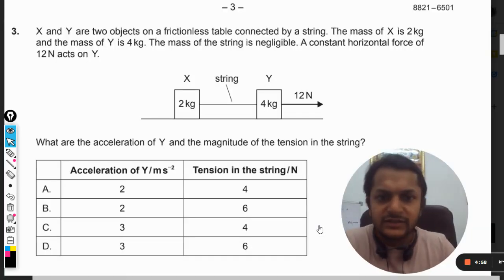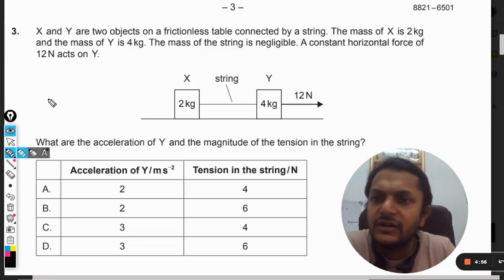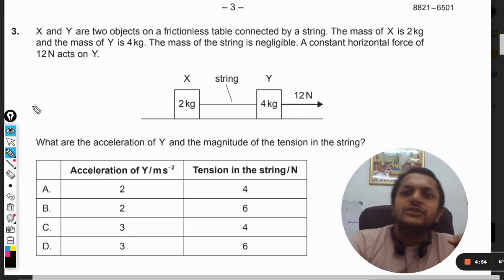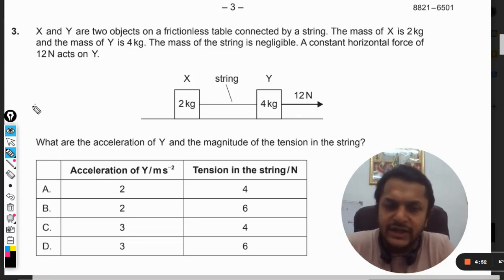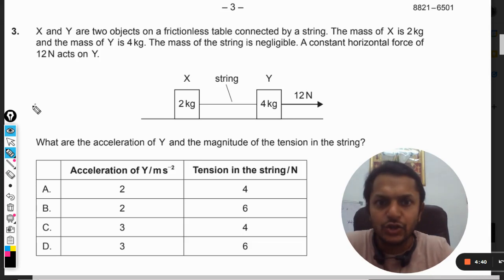Okay dear students, let us read this question and see what is there. X and Y are two objects on a frictionless table connected by a string. The mass of X is 2 kg and mass of Y is 4 kg. The mass of the string is negligible. A constant horizontal force of 12 newton acts on Y.